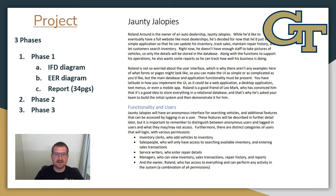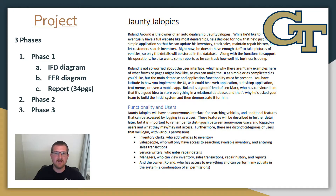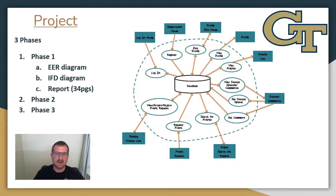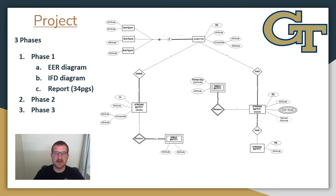On to the project — just like the project in CSE 6242, the project here is broken into three phases, but unlike the other project, this one is not student-designed and your teams are assigned. You're given a prompt that explains a fictional need for a database and your team is asked to design that system. Our semester's example was a car dealership called Jaunty Jalopies who needed a database to manage their vehicles. In the first phase, you're asked for three deliverables: an IFD diagram, an EER diagram, and a report covering a bunch of additional details. My team's report for this phase was 34 pages long, though that does include a lot of figures.